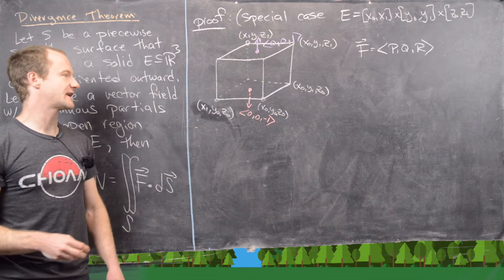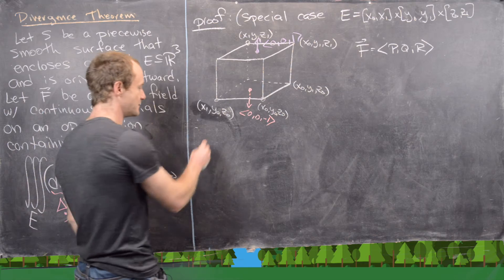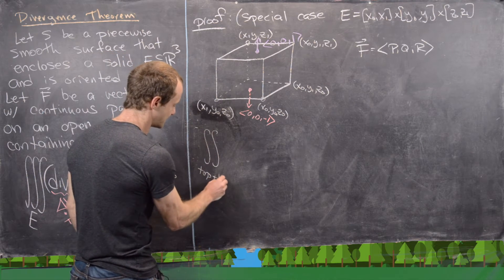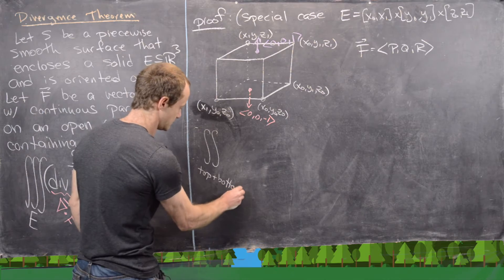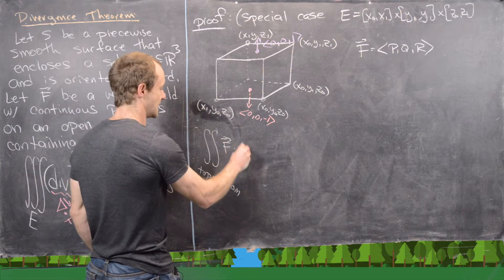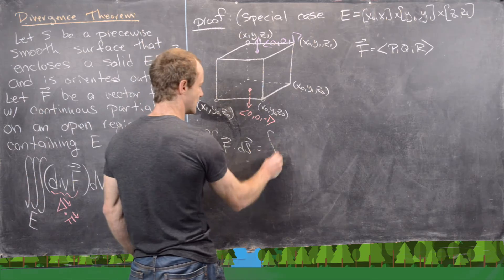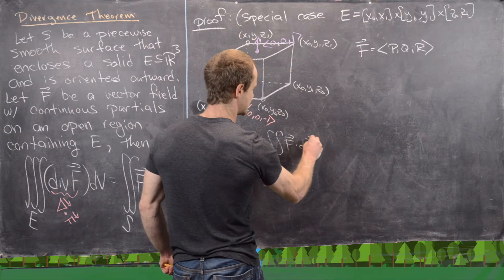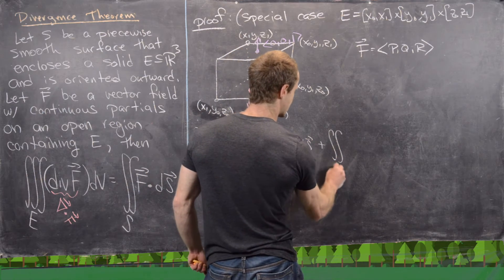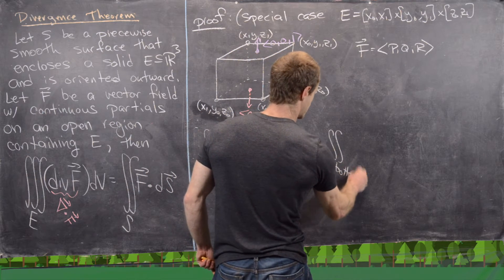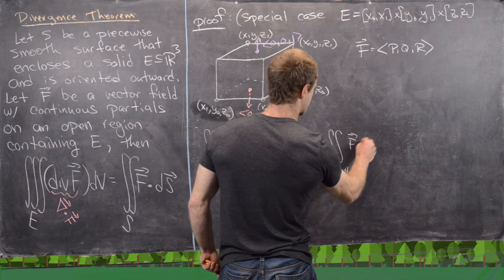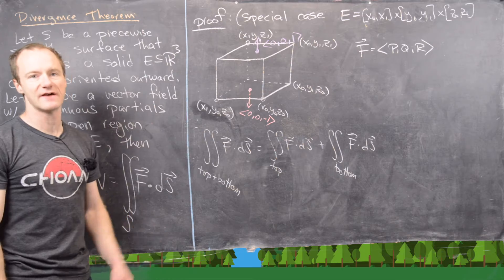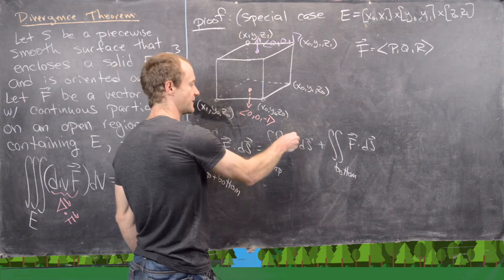So now let's go ahead and calculate the surface integral of the top and the bottom. We can go maybe top plus bottom of F dot dS. So that's going to be the surface integral over the top of F dot dS plus the surface integral over the bottom of F dot dS. Now we can go ahead and apply the definition of a surface integral over a vector field to this.